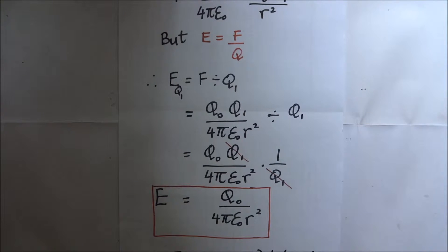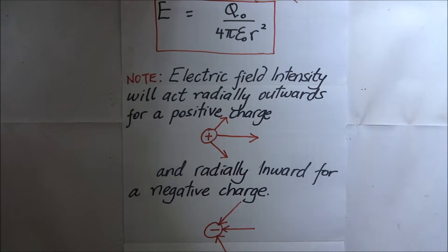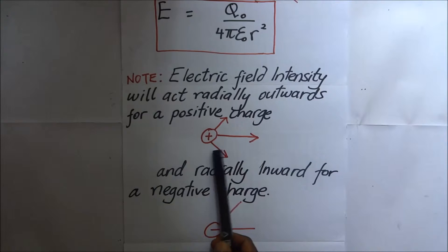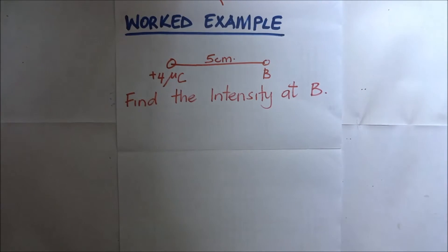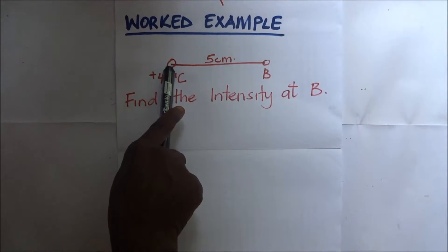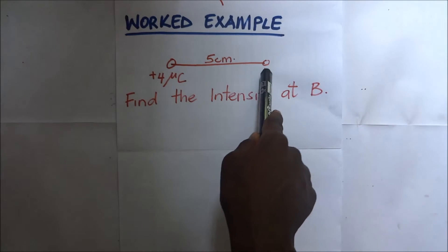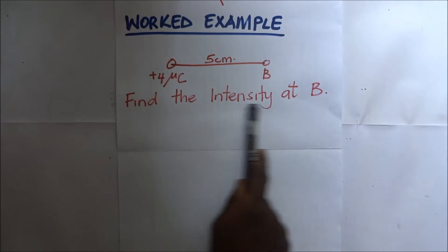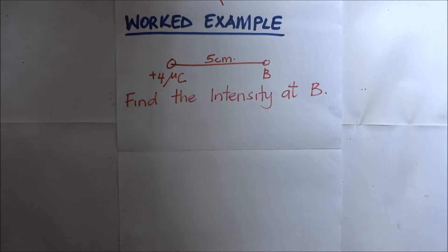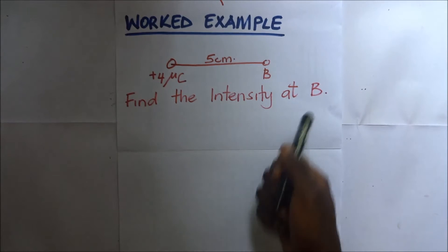Note that electric field intensity acts radially outwards for a positive charge and radially inward for a negative charge. Now let's look at our example. We have a point charge here and a point charge there — this one is four microcoulombs — and we are asked to find the intensity at point B.